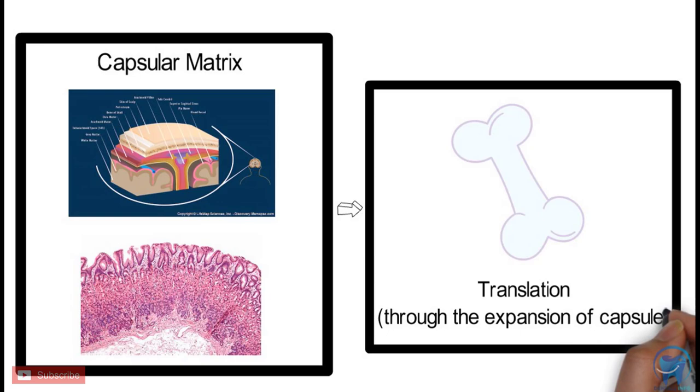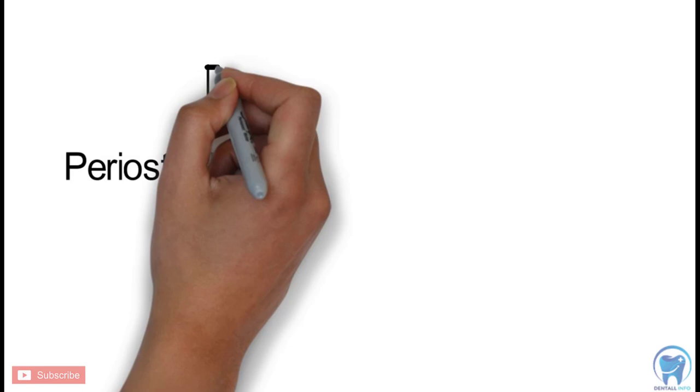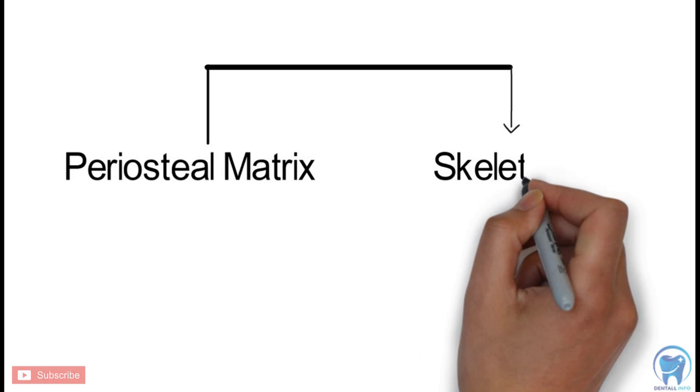Let's see how the periosteal matrix is related to the skeletal units. A direct and active influence of the periosteal matrix is seen on the skeletal unit. It is very important to remember this point.